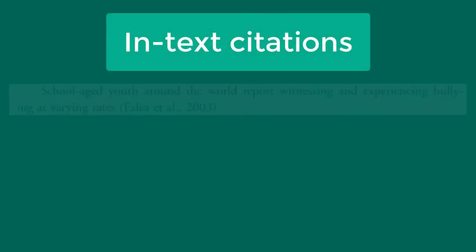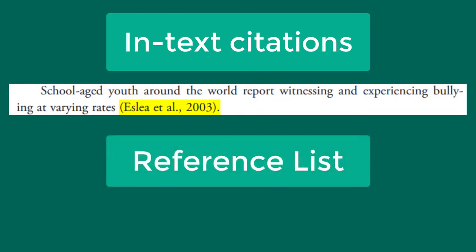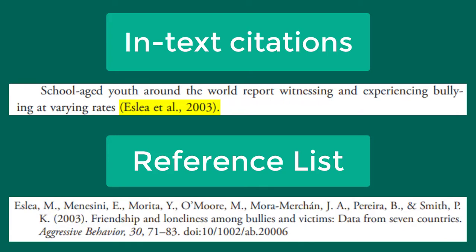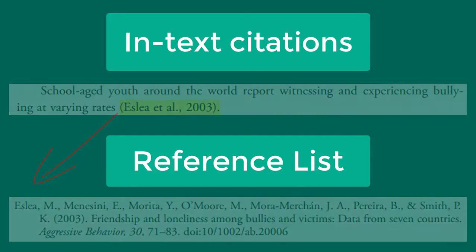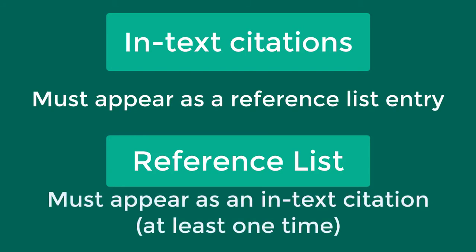While your in-text citations contain the author, date, and maybe a page number, the citations in your reference list contain much more information. Anyone reading your paper should be able to easily identify the resources you consulted by looking at the citations in your reference list. Each source that is cited as an in-text citation must appear in your reference list, and each source cited in your reference list must appear as an in-text citation in your paper.